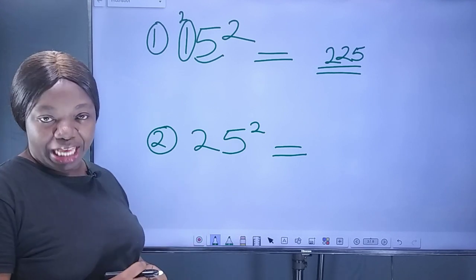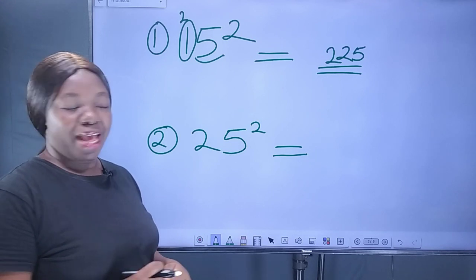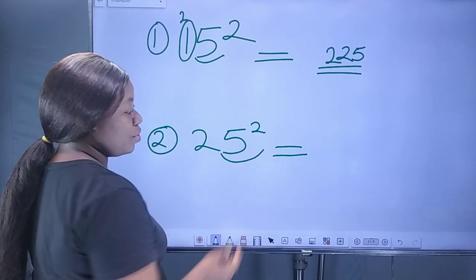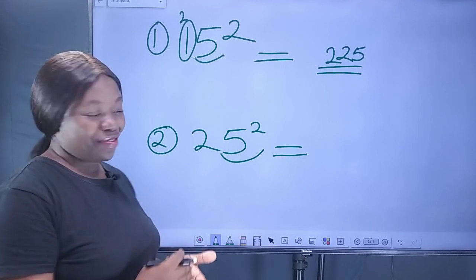Now, let's move to the second example. What is the square of 25? 25 ends with 5. Do not forget I ask you to note that the square of 5 is 25.